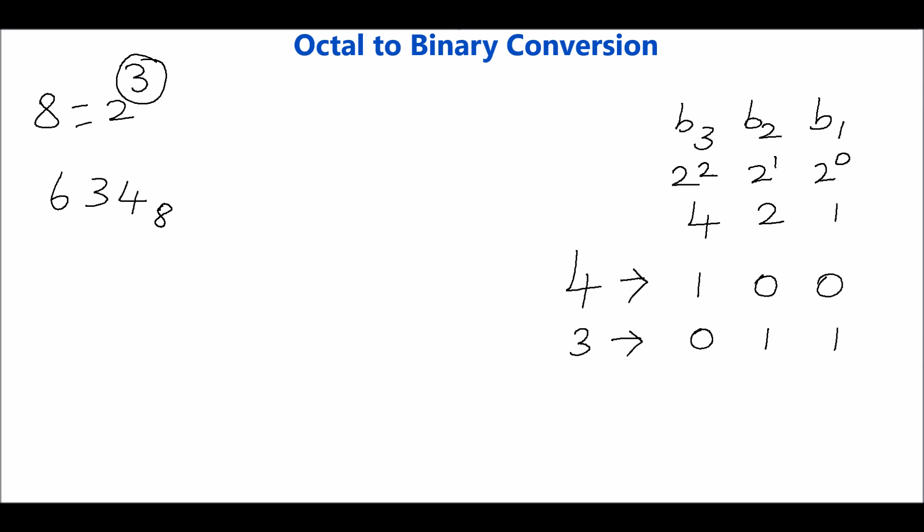Then see how to write number 6. 6 can be obtained by summing 4 plus 2, so bit 3 and bit 2 should be written as 1, the bit 1 position should be put as 0.